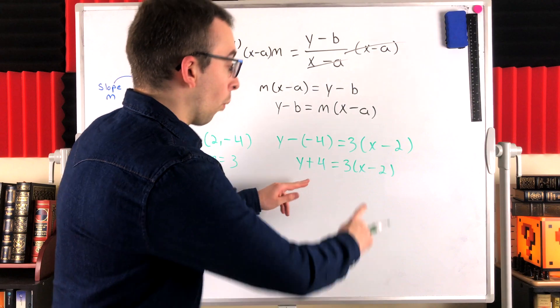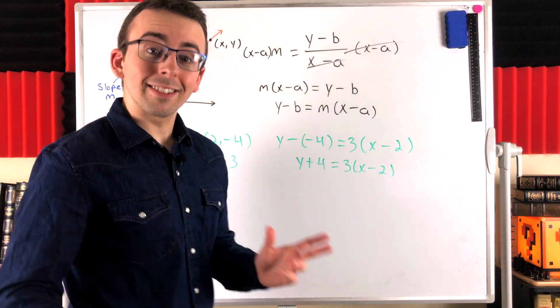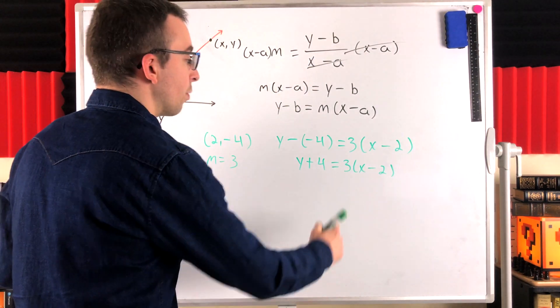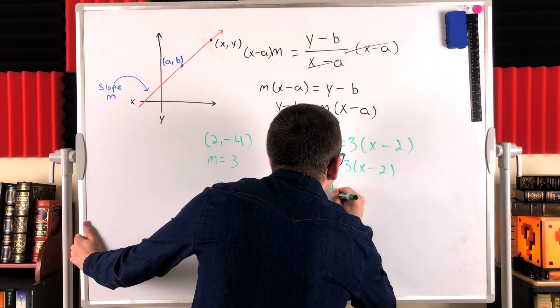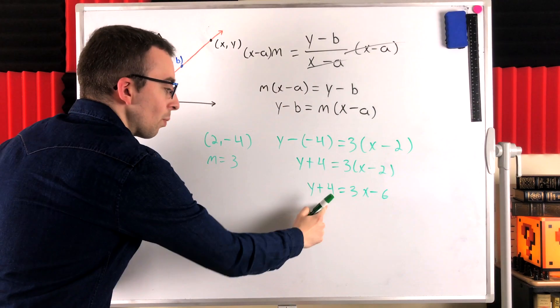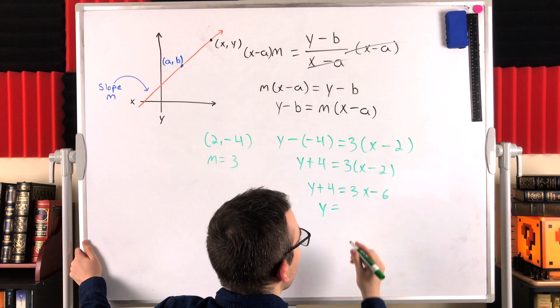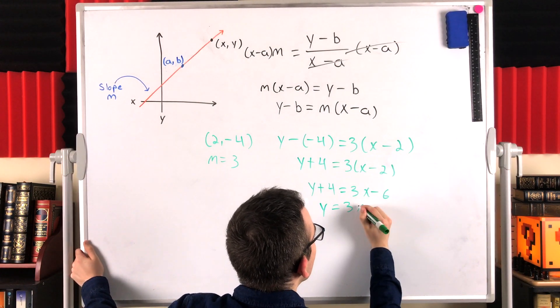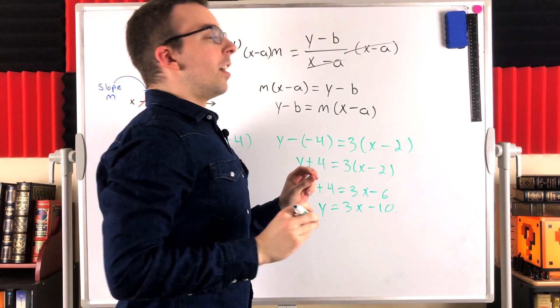And if you wanted to, you could work with this equation just a little bit to get it into a more familiar form, slope-intercept form. If we distribute the 3, then we would have that Y plus 4 is equal to 3X minus 6. Then we could subtract 4 from both sides to get our slope-intercept form equation that Y is equal to 3X minus 10. Beautiful.